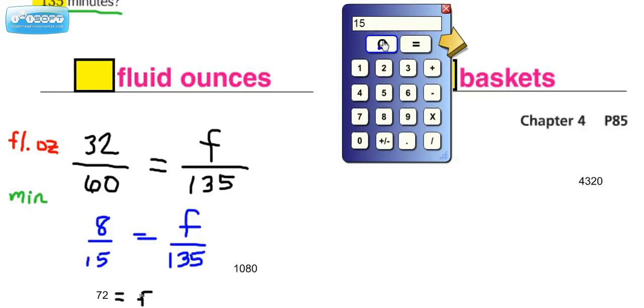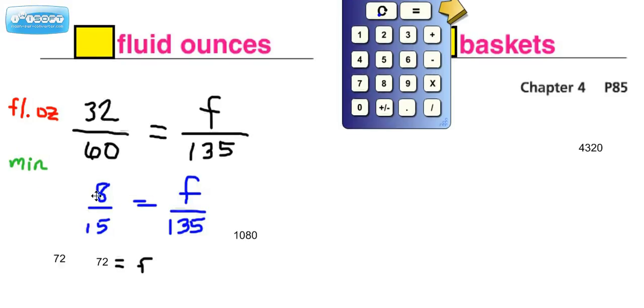Now, if we divide that number by 15, because the other cross product would be 15F, we should get the same thing. Let me try again. 1080 divided by 15 equals—and notice that we get the same thing we got before, 72. So you have to decide: is it going to be easier to simplify the ratio and then go forward or not? Either way will get you the right answer.